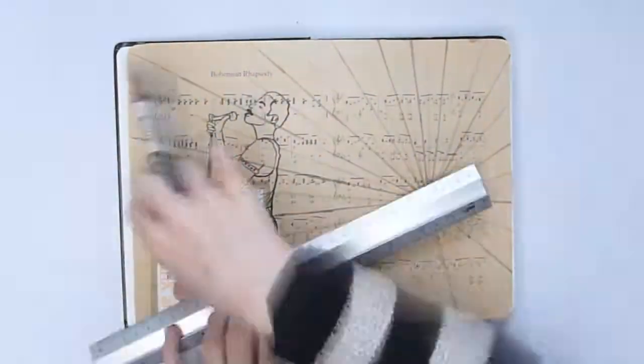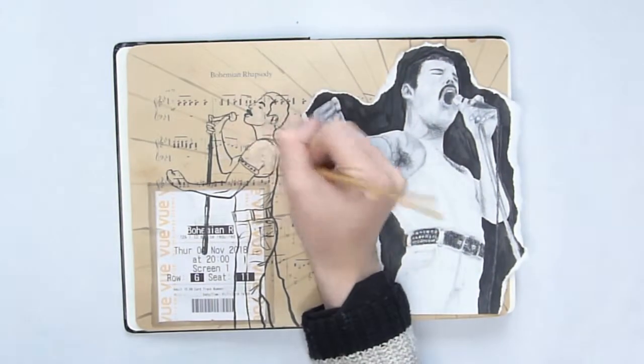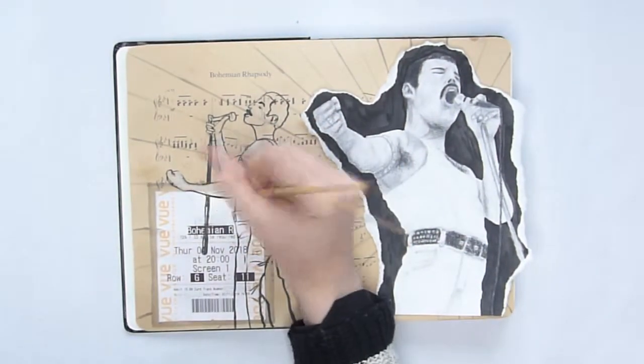So I had to improvise and ended up painting over some of the pen drawing with acrylic paint. It wasn't part of the plan, but I don't think it turned out badly.